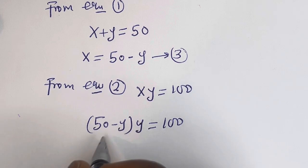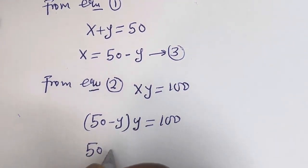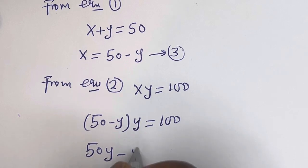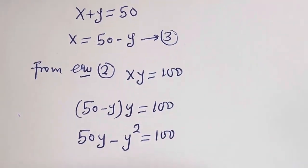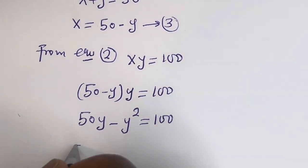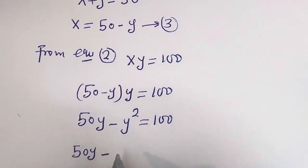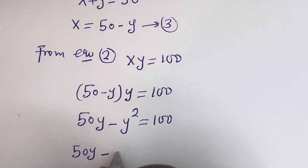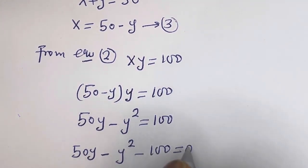Then 50 times y, this is 50y, minus y times y, that is y squared, is equal to 100. So we have 50y minus y squared minus 100 is equal to 0.